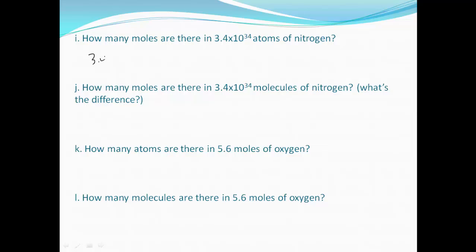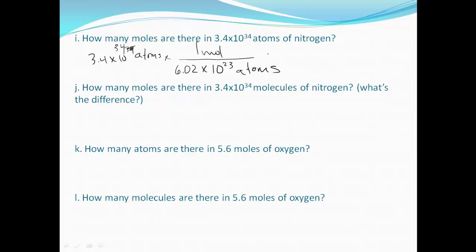We have 3.4 times 10 to the 34th atoms and we want to convert to moles. We have 6.02 times 10 to the 23rd atoms in one mole. Computing 3.4 times 10 to the 34th divided by 6.02 times 10 to the 23rd gives us 5.6 times 10 to the 10th moles.